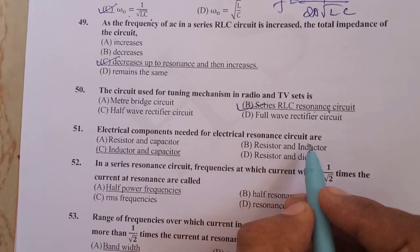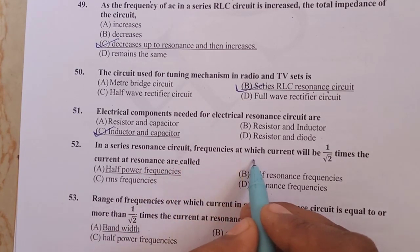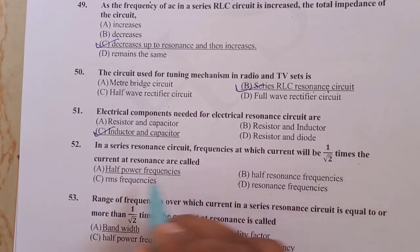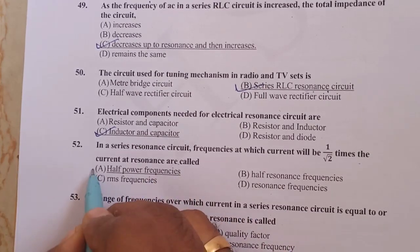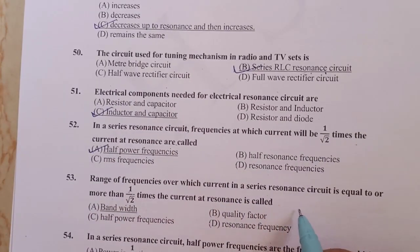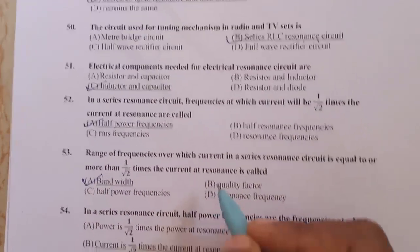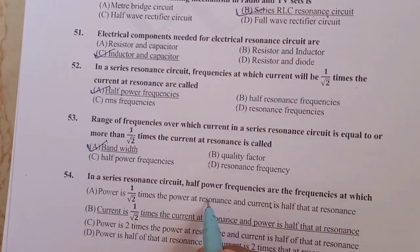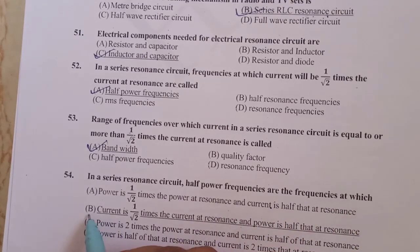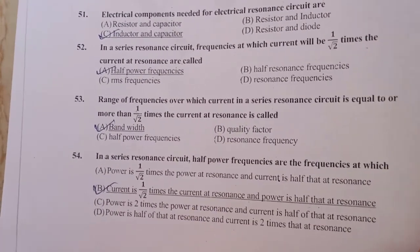Electrical components needed for electrical resonant circuits are an inductor and a capacitor. In a series resonant circuit, the frequencies at which the current is 1/√2 times the current at resonance are called half-power frequencies. The range of frequencies over which the current in a series resonant circuit is equal to or more than 1/√2 times the current at resonance is called the bandwidth. At half-power frequencies, the power is half of that at resonance.